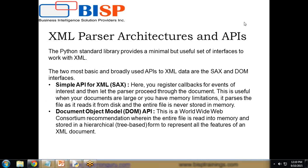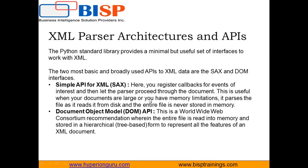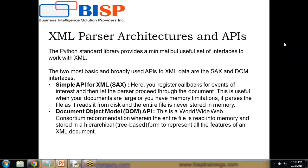In this video we will see how to create one XML file and then how to parse or read an XML file using Python. We need XML parsers to read the XML file. There are two standard APIs to parse XML files in Python: SAX and DOM. SAX is Simple API for XML and DOM is Document Object Model API.